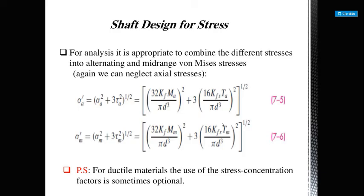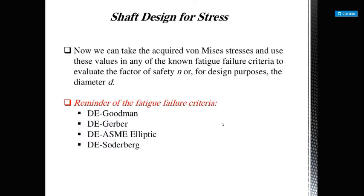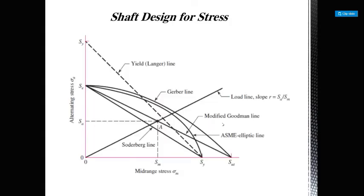For analysis, it is appropriate to combine the different stresses into the alternating and mid-range von Mises stresses. Please note that for ductile materials, the use of stress concentration factors is sometimes optional. We can then use these values in any of the non-fatigue failure criteria to evaluate the factor of safety or to design for diameter. Failure criteria options include Goodman, ASME elliptical, and Soderberg.